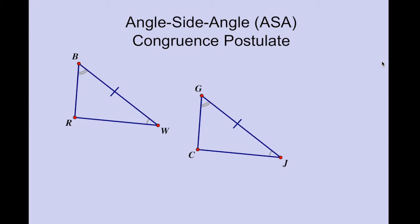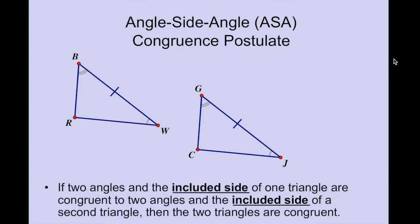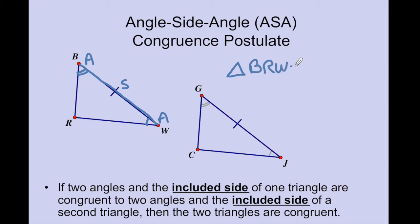The next method to prove triangles congruent is the Angle-Side-Angle congruence postulate. This is when we use a combination of two angles and the side that is included between the two angles. The included side is the segment whose endpoints are the two angles. We can name this: triangle BRW is congruent to triangle — I started with B having double arcs, so I start with G having double arcs; R has no arcs, so I go to C with no arcs; and finish with J. That would be an example of Angle-Side-Angle.